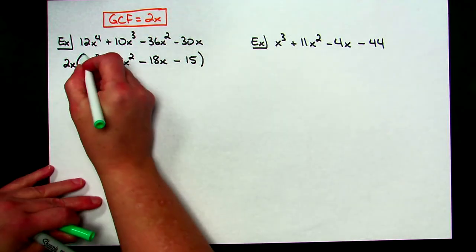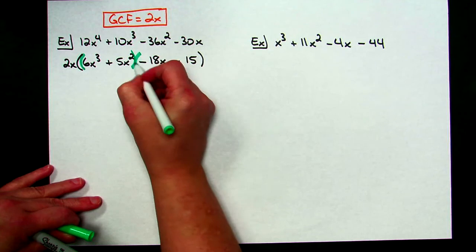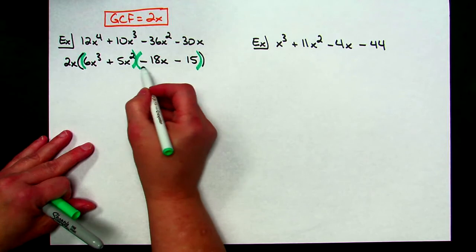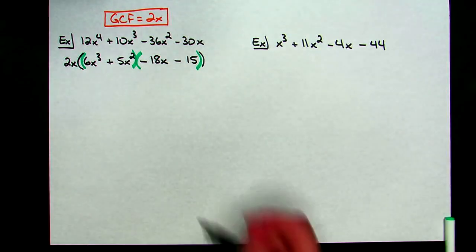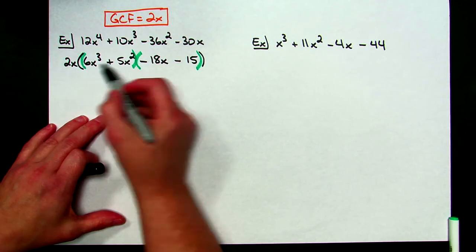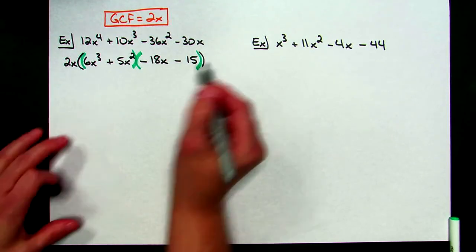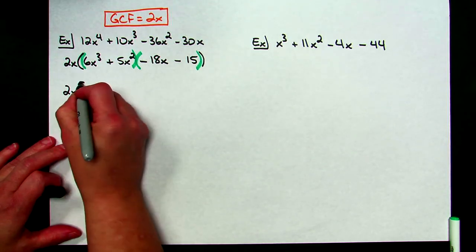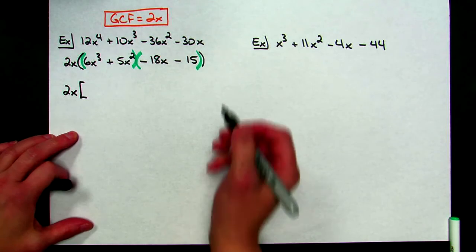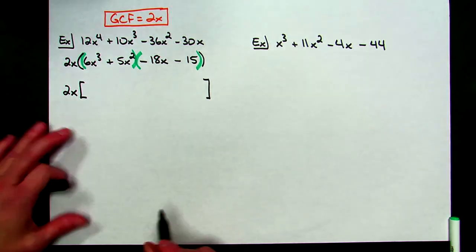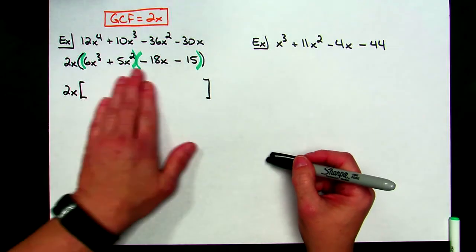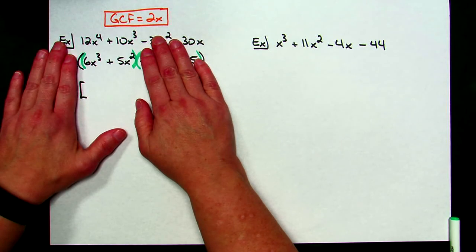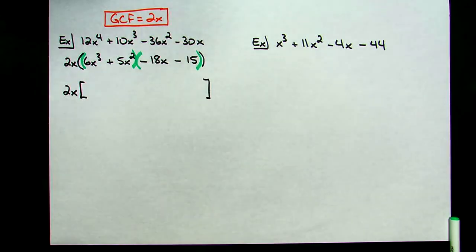That 2x is just going to come all the way down — I'm not going to have to worry about it for the rest of the problem. I will concentrate just on these four inside terms and do factor by grouping just like in the last two examples. So I am going to group those first two terms together, and I will group together these second two terms, remembering to include that minus sign right there so I can clearly see that is a negative 18x. I'll change these outside parentheses to brackets in the next step just to clear things up a little bit.